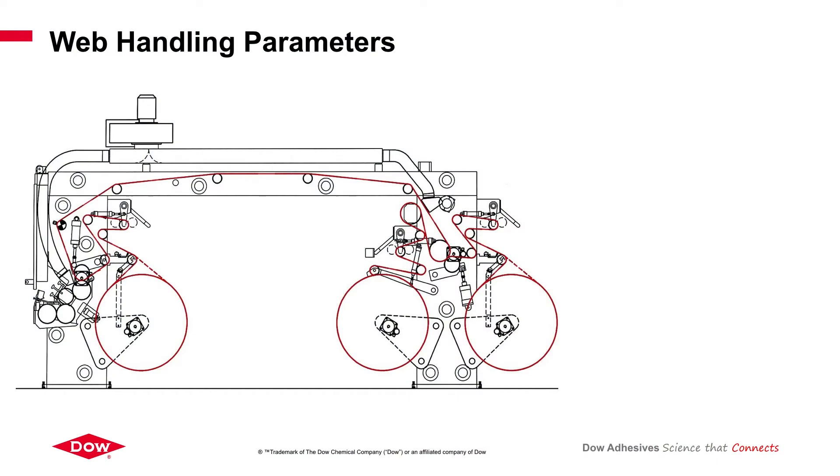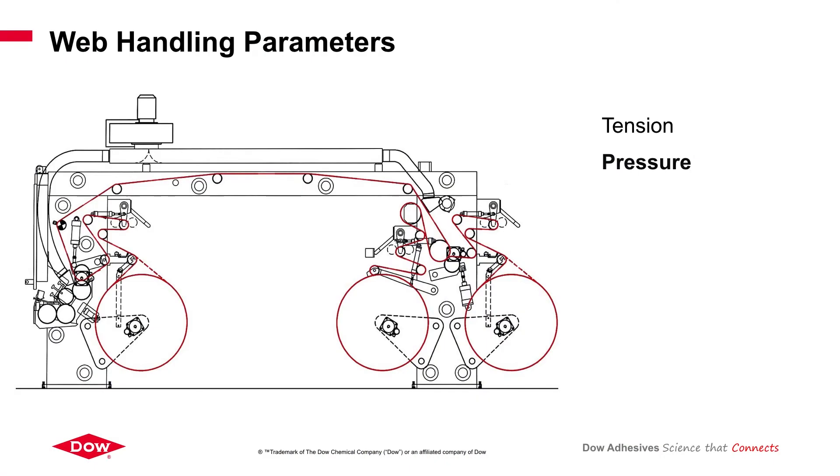There is a list of parameters that we need to take care of in order to get a good optics result at the lamination. The first and most important one is tension. On our machine, tension can be controlled by a dancing roll and load cell. The second parameter is pressure and temperature, both of which we can control on the coating and laminating nip.